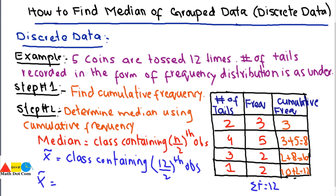Now which class contains the 6th observation? We have to use the cumulative frequency. This class contains the 6th observation as this is the second class, because we have 8 and 6 is less than 8, so we have to consider this class.